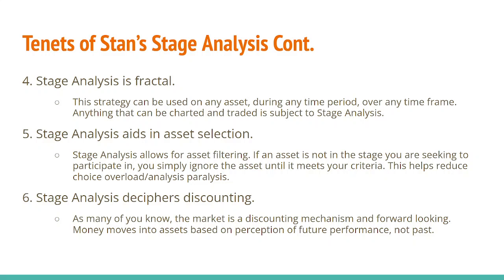Number six: stage analysis deciphers discounting. While stage one is forming, the news on an asset is often terrible and the fundamentals continue to decline. But the market isn't looking at that negative sentiment anymore — it's looking at the future of the asset. If they believe revenues, earnings, and profit margins are going to increase from here, prices will stop falling and a bottom will form. The opposite is true when we're at a peak. The market is a discounting mechanism and forward-looking money moves in assets based on perception of future performance, not current price.